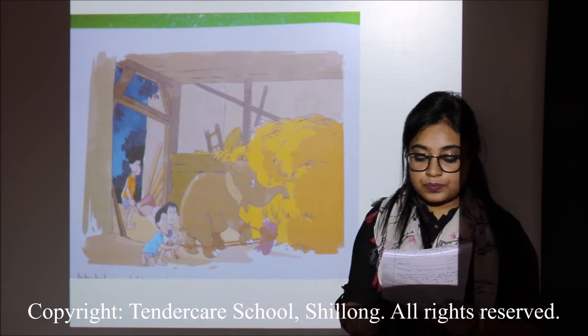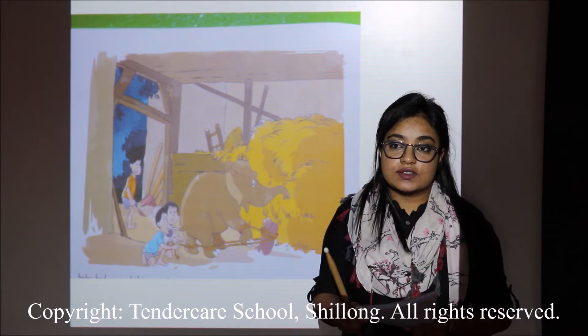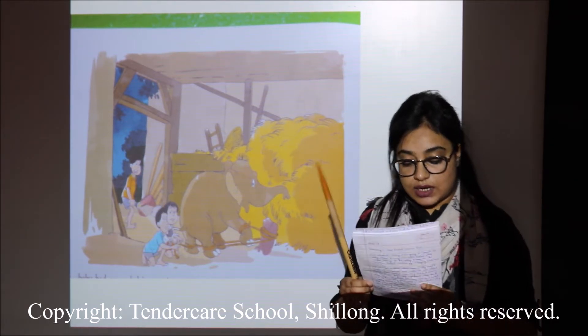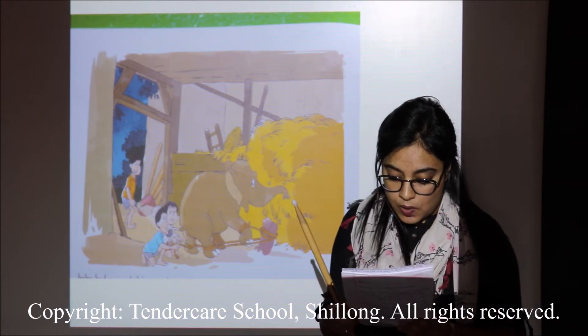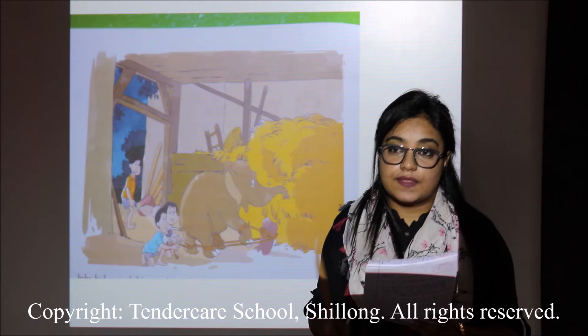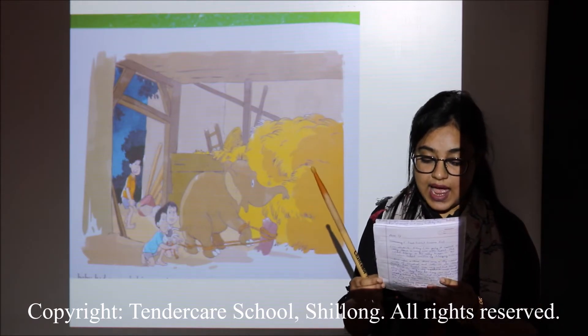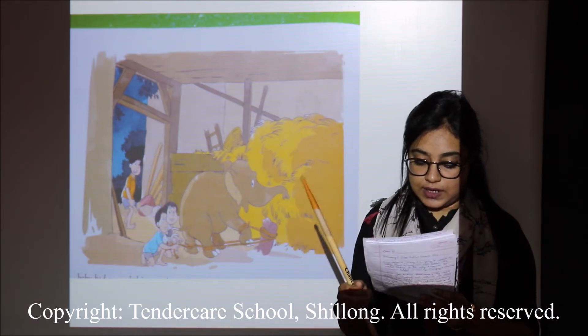So who is the greedy villager in the story? It is Nalia. And who are the three boys who decide to rescue the baby elephant from Nalia? Dhanai, Babur and Jonty.